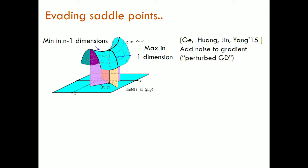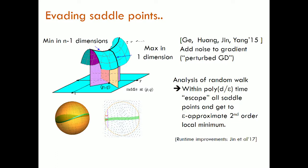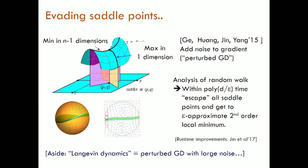This has been analyzed in a nice paper by Ge, Huang, Jin, and Yang. The idea is to add noise to gradient descent — called perturbed gradient descent. If you add noise to gradient descent, even if it gets close to a saddle point, it sort of walks around in a random-walk fashion. They can analyze that random walk and show that within polynomial time in D over ε, you can escape all saddle points and get to an approximate second-order local minimum. This analysis has since been improved to a near-optimal result.